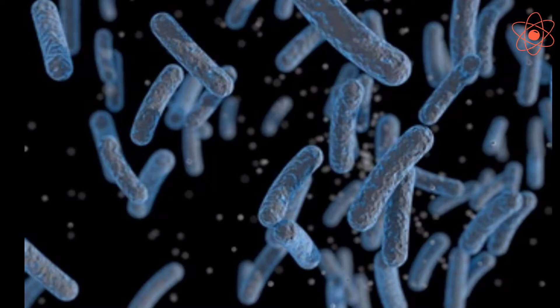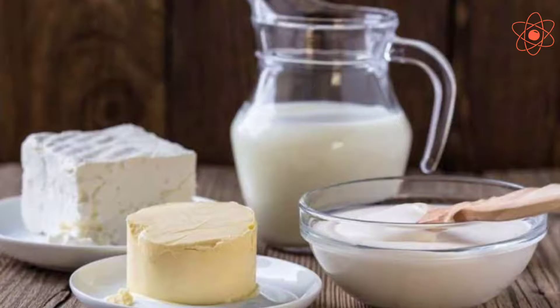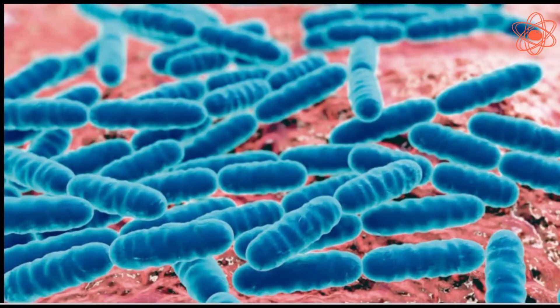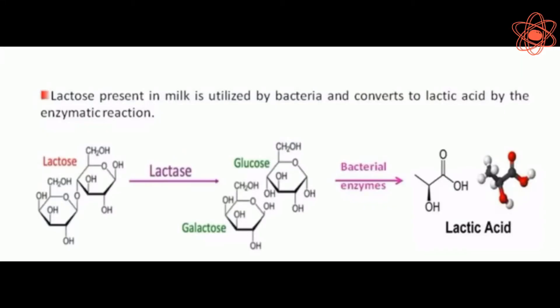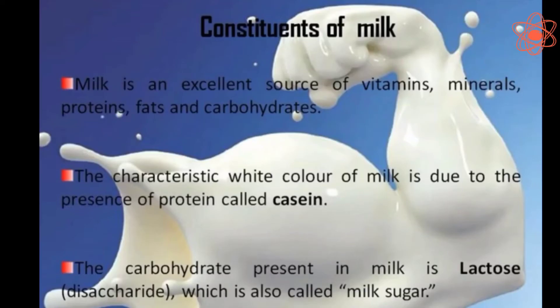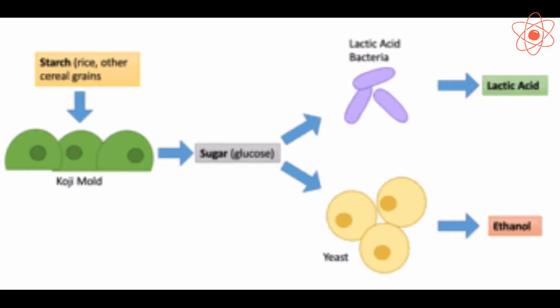First use: bacteria are used in making some of our popular food items such as curd and cheese. These are made by the action of bacteria on milk. Curd is formed due to a bacterium called Lactobacillus. When a spoonful of curd is added to warm milk, these bacteria multiply and convert the lactose sugar present in the milk to lactic acid. This creates the acidic environment needed for casein coagulation — casein is a protein present in milk. This process of conversion of a sugar into an acid or an alcohol by the action of microorganisms is called fermentation.